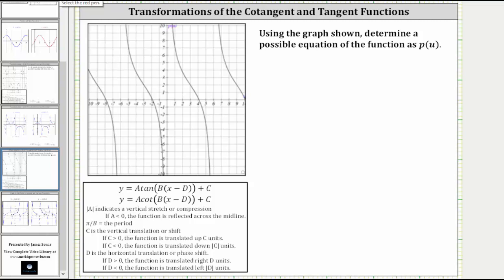Using the graph shown, determine a possible equation of the function as p of u, meaning the input variable is u, not x. Looking at the graph, we should be able to recognize the equation is going to be in terms of cotangent or tangent.